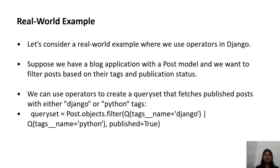Real world example: Let us consider a real world example where we use operators in Django. Suppose we have a blog application with a Post model and we want to filter posts based on their tags and publication status. We can use operators to create a query set that fetches published posts with either Django or Python tags: query_set = Post.objects.filter(Q(tags__name='Django') | Q(tags__name='Python'), published=True).